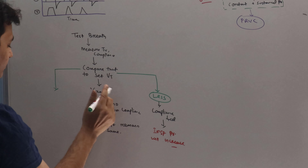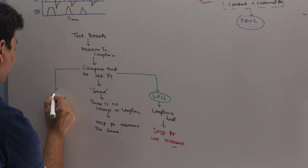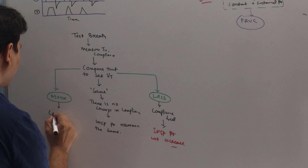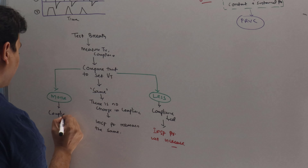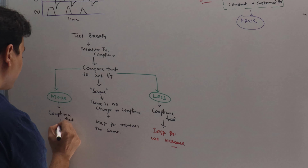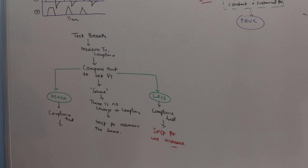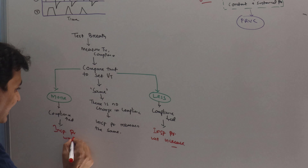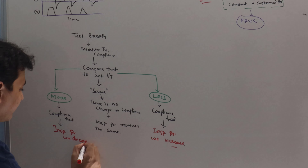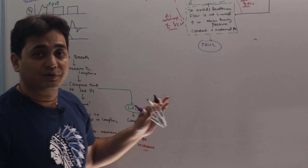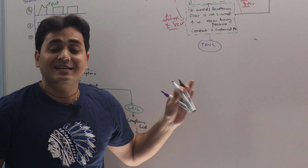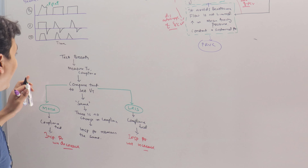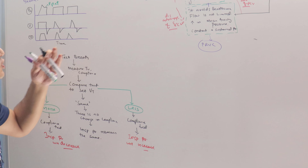If the measured tidal volume becomes more than the set tidal volume, that means compliance has increased. In this situation, the inspiratory pressure will decrease. You can see how it is very dynamic, responding to changes in tidal volume and changes in the compliance of the lung parenchyma. This is the advantage of this kind of adaptive mode of ventilation.